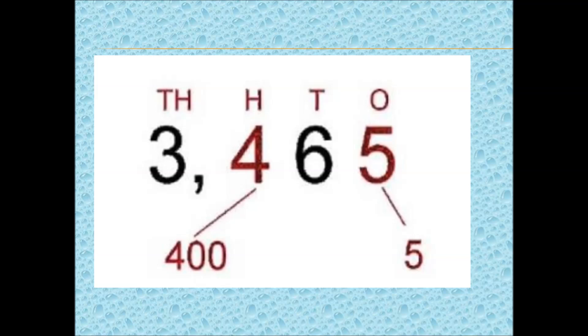Let us take another example, 3465. In this number, the place value of 5 is 5 ones or simply 5 and the place value of 4 is 400.